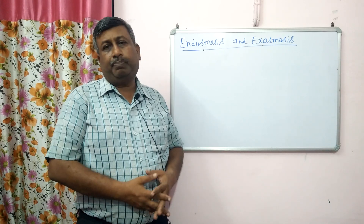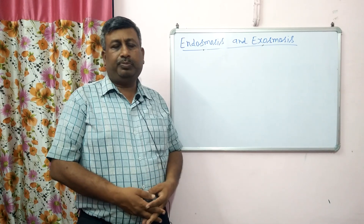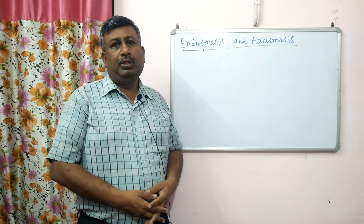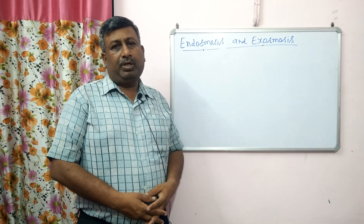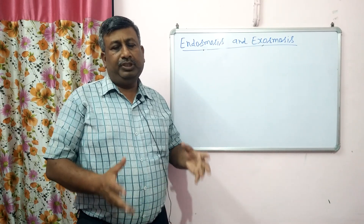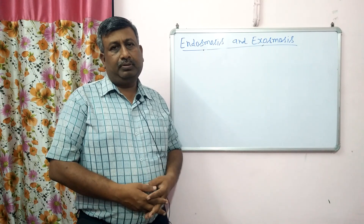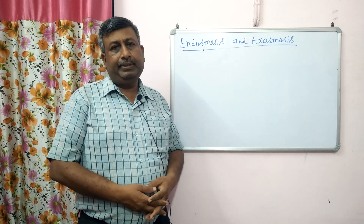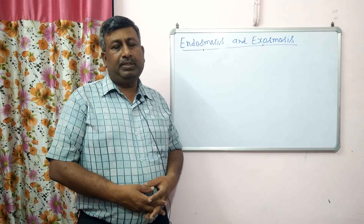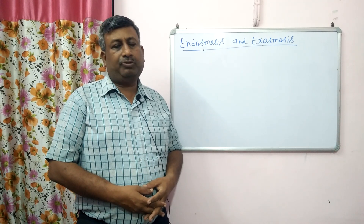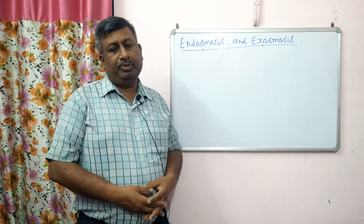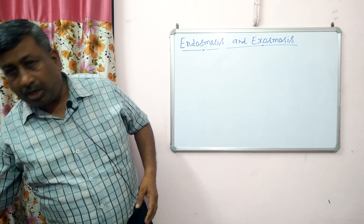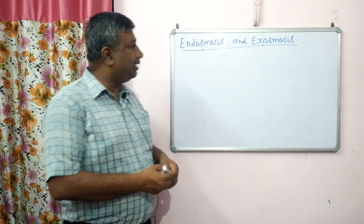What is the process of endosmosis and exosmosis, and what is the impact on cell water content of these processes? Will the cell become flaccid or turgid? That is the influence of exosmosis and osmosis. So how does this process take place?